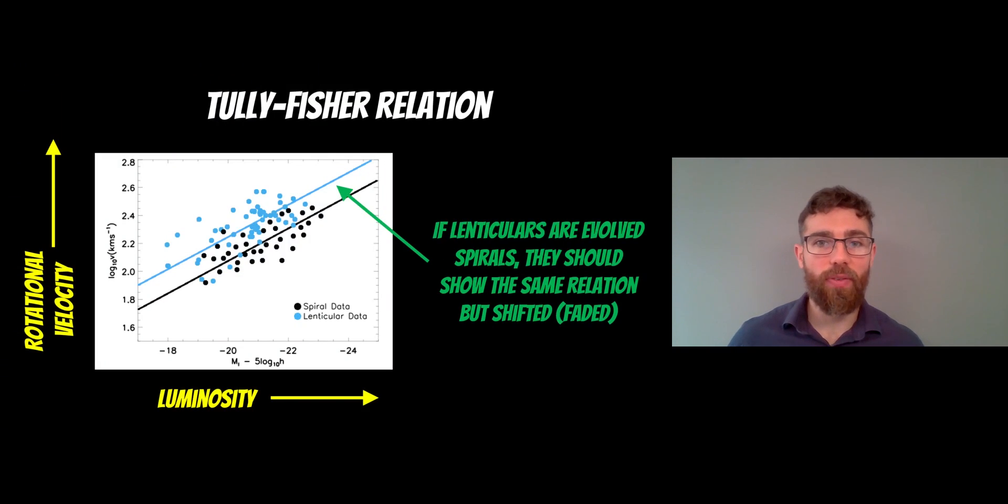Now, if that was true, we can go to the Tully-Fisher relation, which is basically a relationship between the luminosity of a spiral galaxy and its rotational velocity. And there's a trend where with a set luminosity, it will have a set rotational velocity. There's basically a trend and relationship there. Now, if lenticulars were a form of spirals that evolved and faded and got dimmer, it should show the same dynamics, but a lower luminosity because they're faded. When you do these plots, they do generally show that.